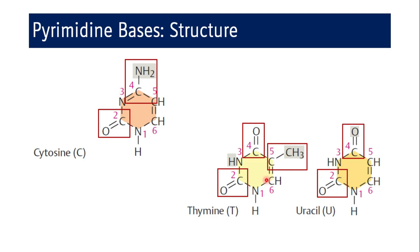Coming to thymine — we often say thymine is present only in DNA, but that is not entirely true. Minor amounts have also been found in tRNA. If you remember the tRNA structure, it has a TΨC loop — thymine, pseudouracil, and cytosine loop — so there is a presence of thymine in tRNA.